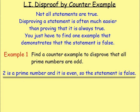Disproof by counterexample was the first main lesson in this chapter. Not all statements are true, and disproving a statement is often much easier than proving it is always true, because all you have to do is find one example that proves the statement to be false. For example, find a counterexample to disprove that all prime numbers are odd. If you imagine all your prime numbers — 2, 3, 5, 7, 11, 13, and so on — they're all odd apart from that very first one. 2 is the only even prime number, so 2 proves that statement is false.